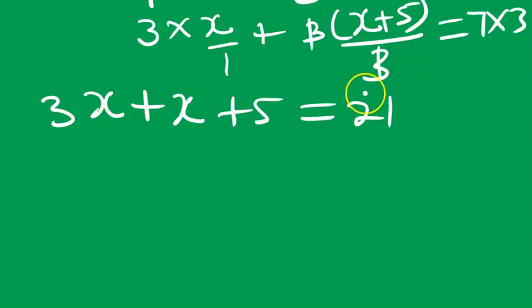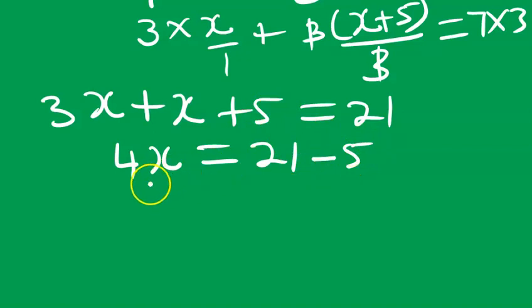Let us add like terms. 3x plus x is 4x equals to 21. Then we transpose this 5 minus 5.